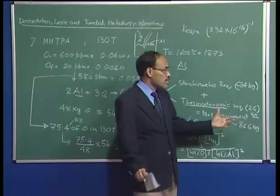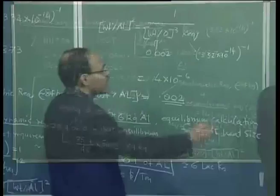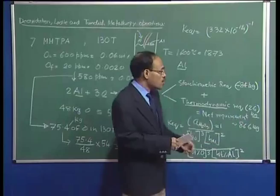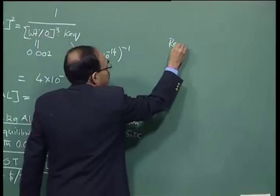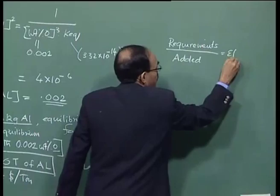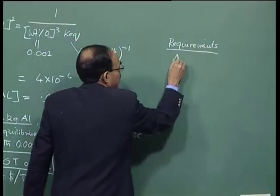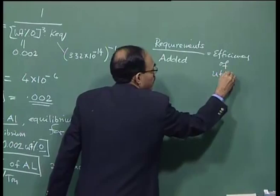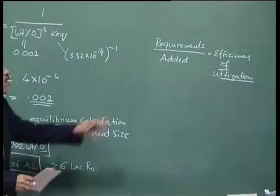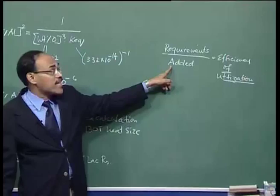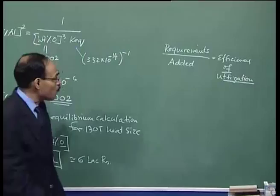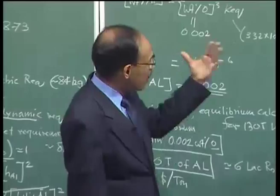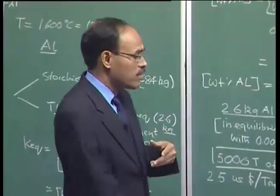Therefore we have to add more aluminum than the calculated requirement. The efficiency of utilization is defined as requirement divided by what is actually added. For buoyant additions like aluminum, the recovery rate or efficiency of utilization is significantly smaller than 1 — about 60 to 70 percent in general — so the actual cost could be about 30 percent higher, translating the 6 lakh rupees to perhaps 10 to 12 lakh rupees per annum.